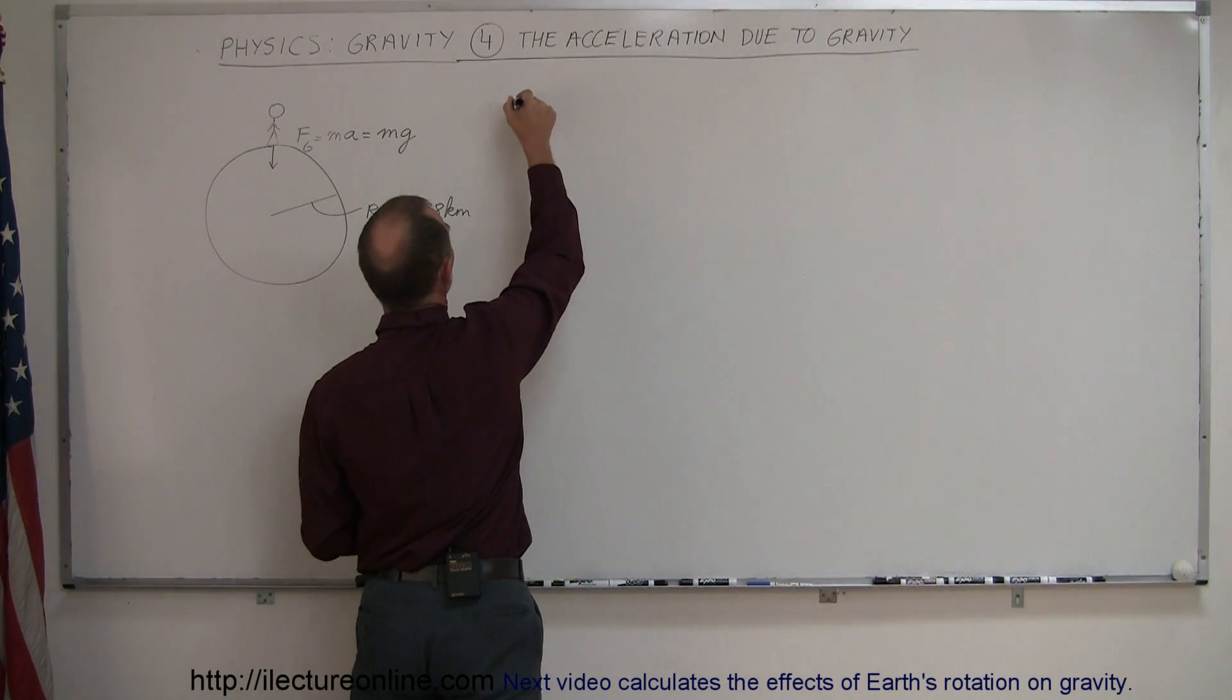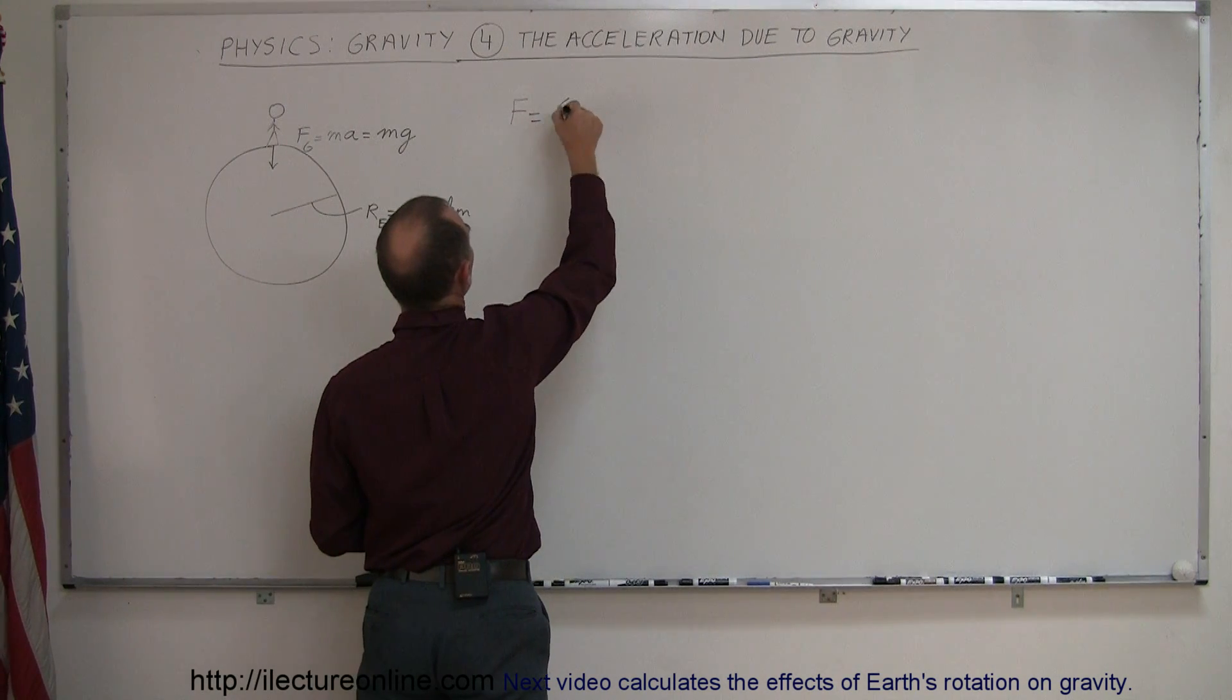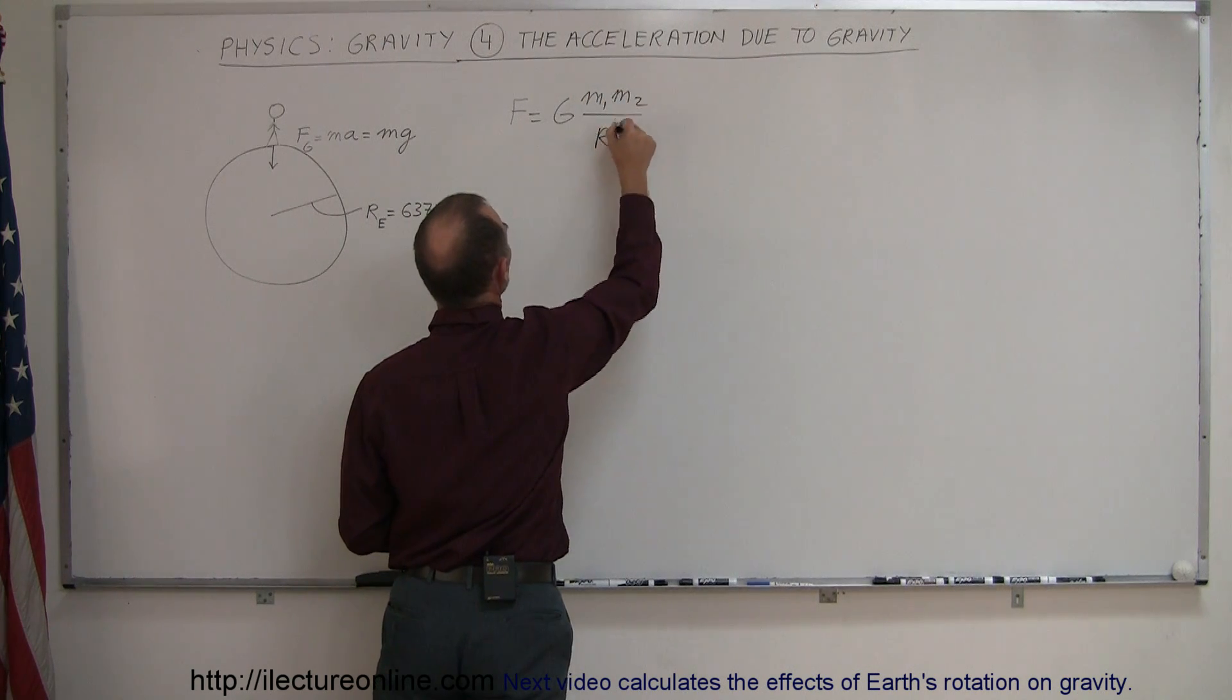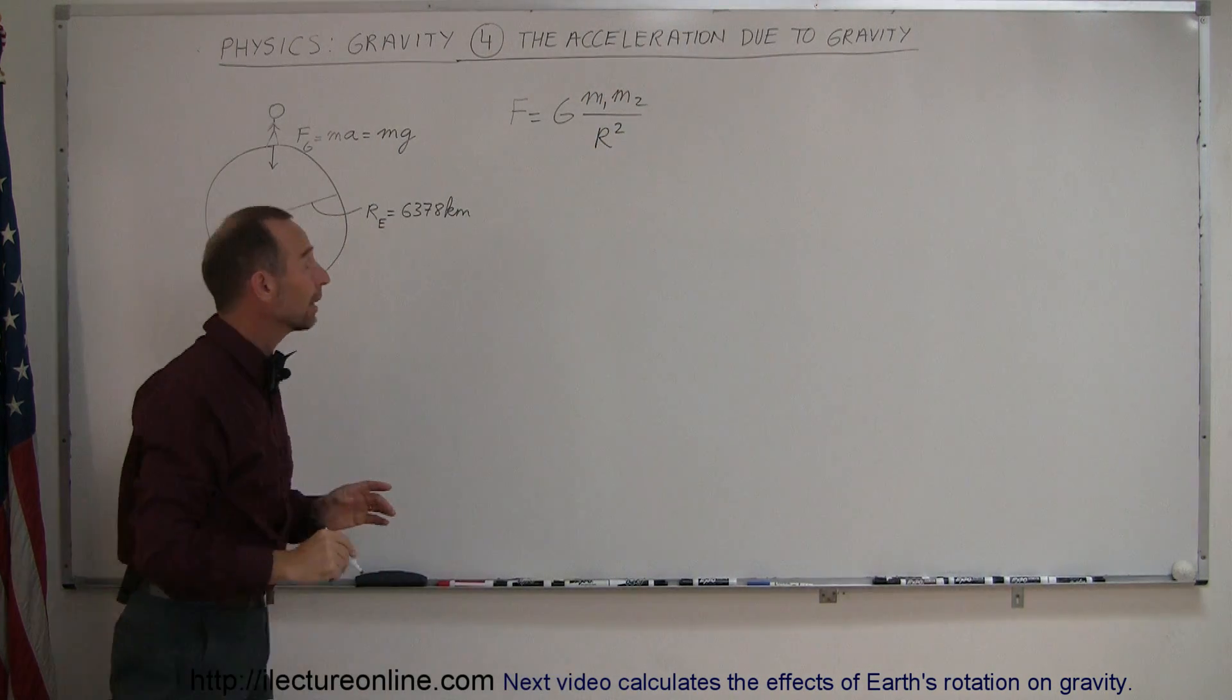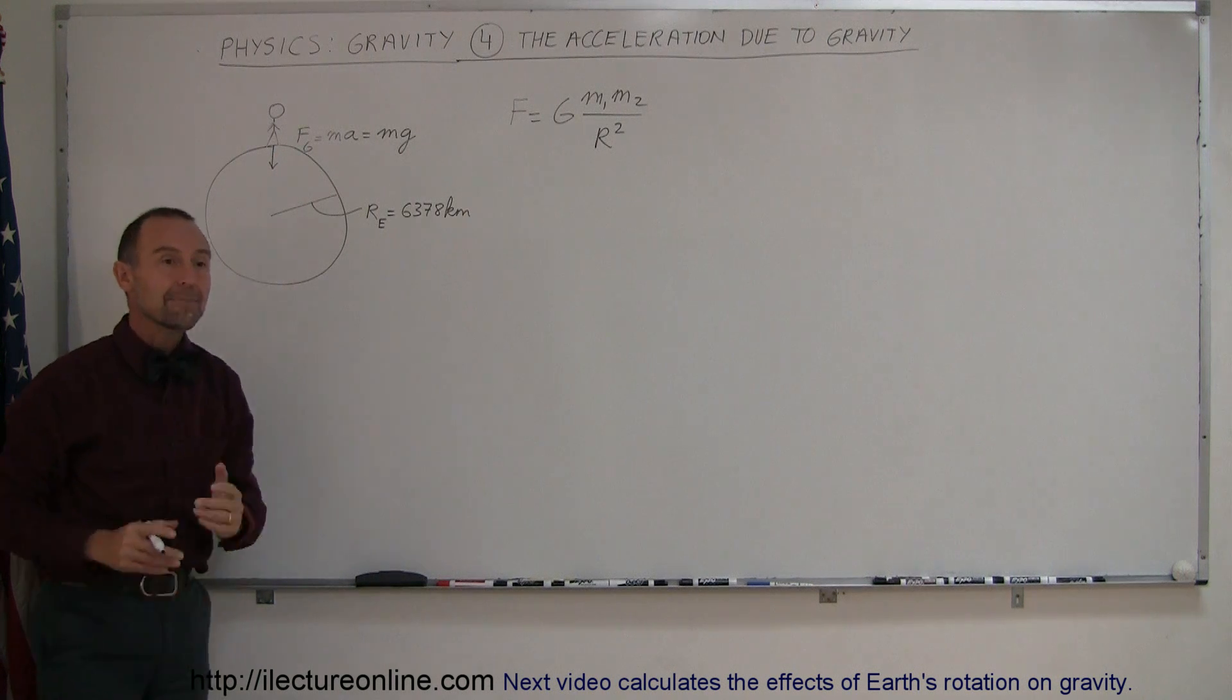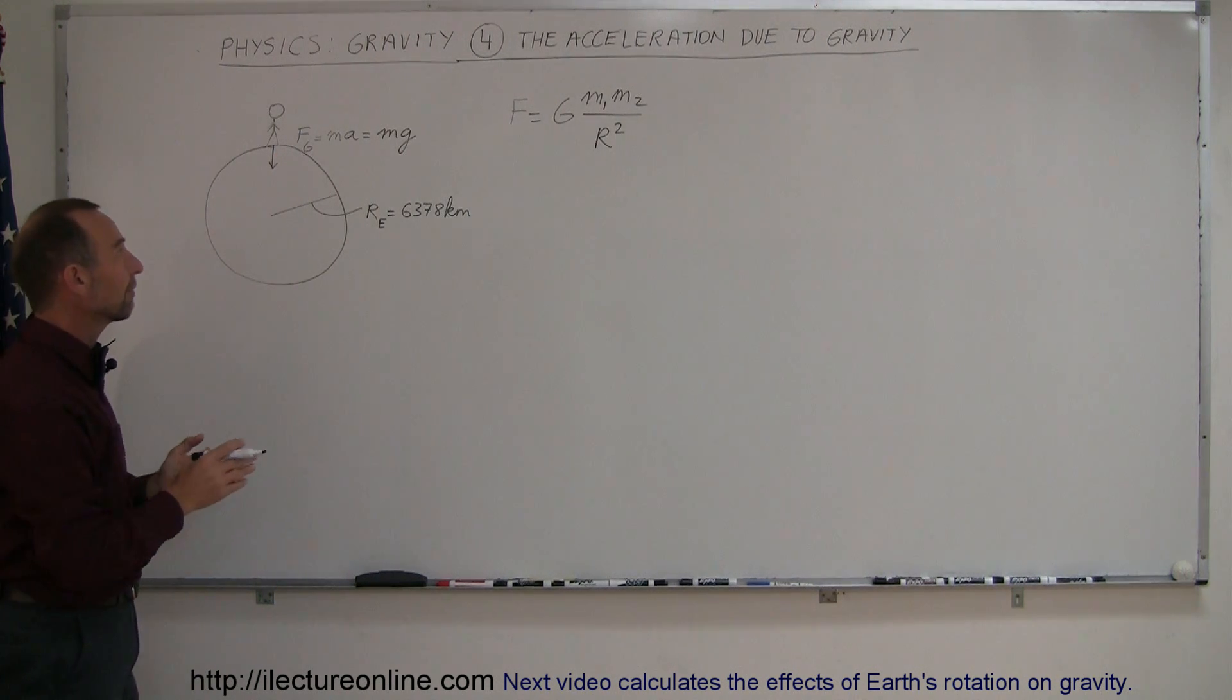Remember the equation where F is equal to G times m1 m2 divided by the distance between them squared. We also know that any object like a person standing on the earth will feel a force of gravity, and that force is always equal to mA, the mass times acceleration due to gravity.